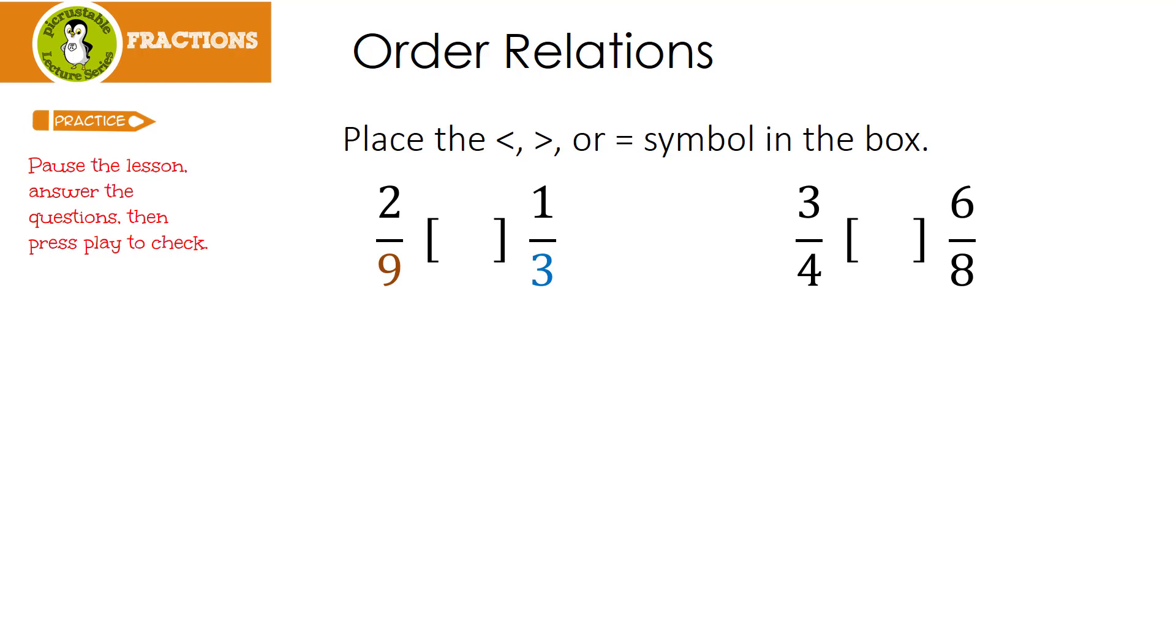Let's see how you did. So we have 2 ninths and 1 third. Once again, I multiplied by each other's denominator. So I took 2 ninths times 3 over 3 and then 1 third times 9 over 9. This gave me 6 over 27 and 9 over 27.